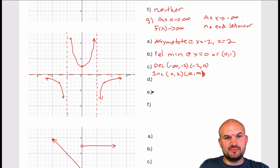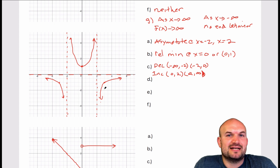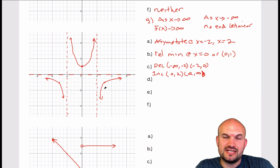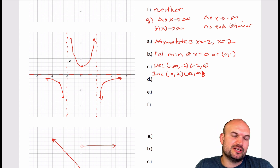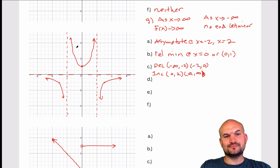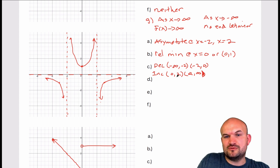Part D is the boundness. We want to see if this graph has any boundness. There is no absolute max and no absolute min, so this graph is unbounded.